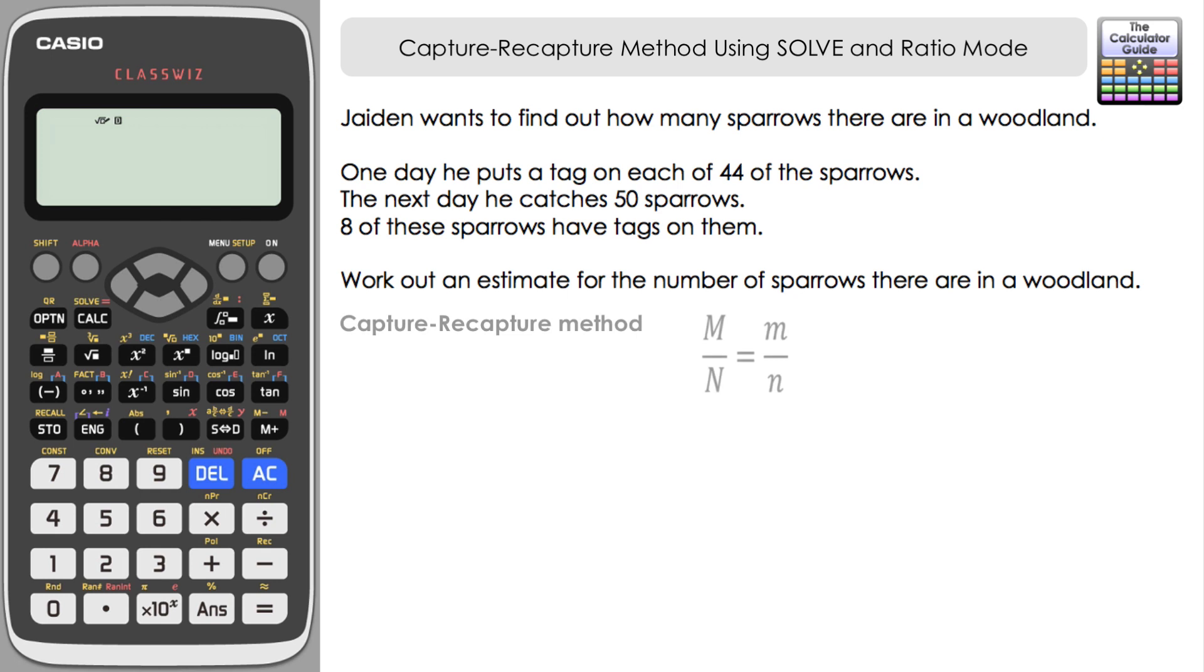The capture-recapture method is based on a ratio. We have capital M over capital N equals m over n, lowercase letters. I like it this way around because the left-hand side refers to the capture, what's happening initially, and then the right-hand side is referring to the recapture. M is the number of tagged creatures that we've got. So capital M on the top on the left-hand side would be the number of animals initially tagged—that was 44 sparrows initially. The little m would be how many were tagged in our recapture—that was 8.